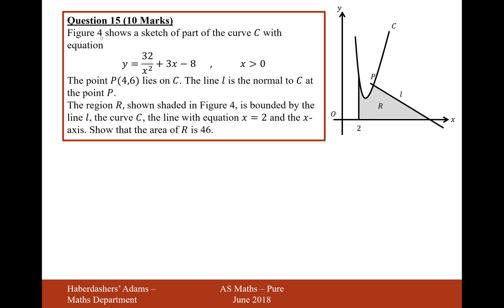Question 15 says that figure 4 shows a sketch of part of the curve C with equation y equals 32 over x squared plus 3x minus 8. The point P is the coordinate 4, 6, so that's this point here, 4, 6, lies on C.